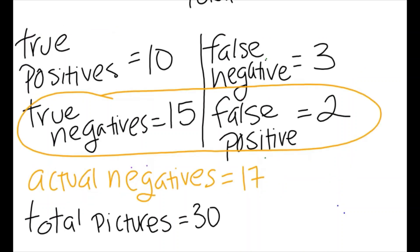And our actual negatives is 2 plus 15, or 17. In that, of the 30 images given to the child, 17 did not have dogs in them.